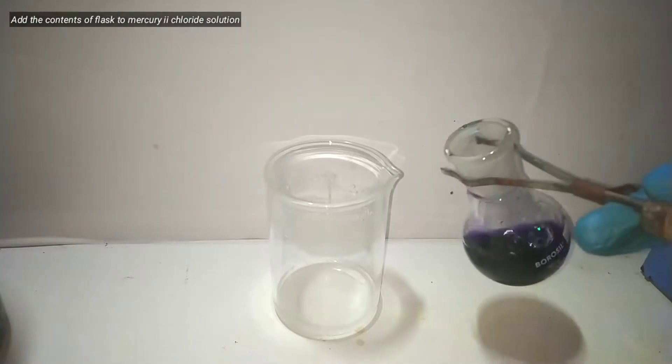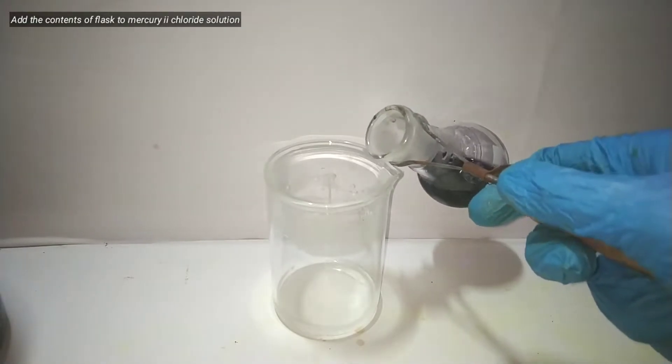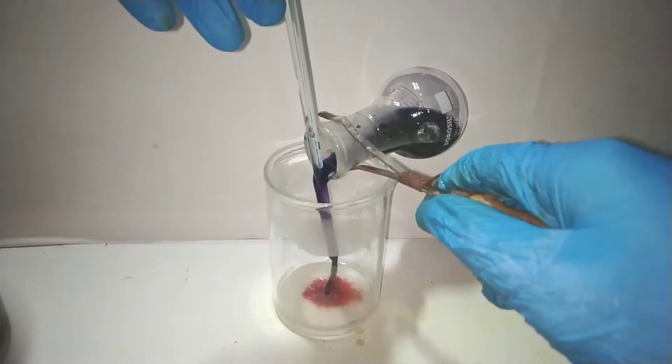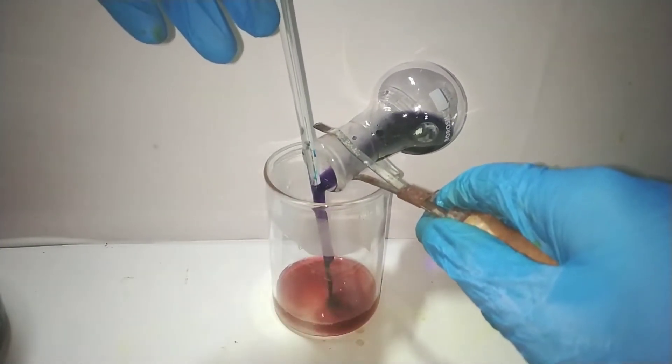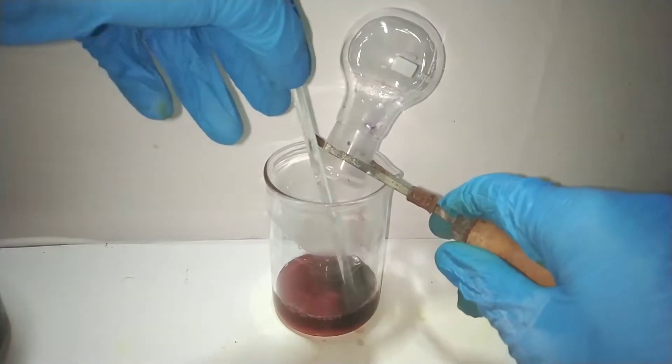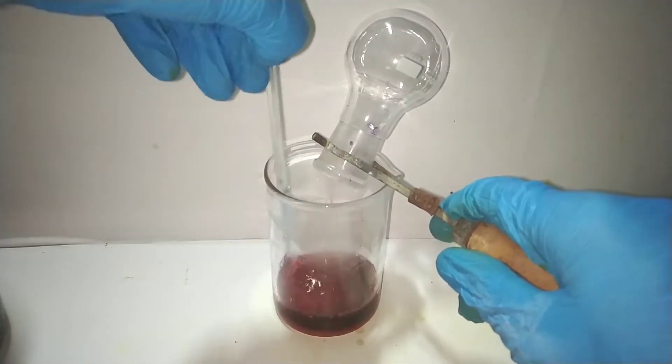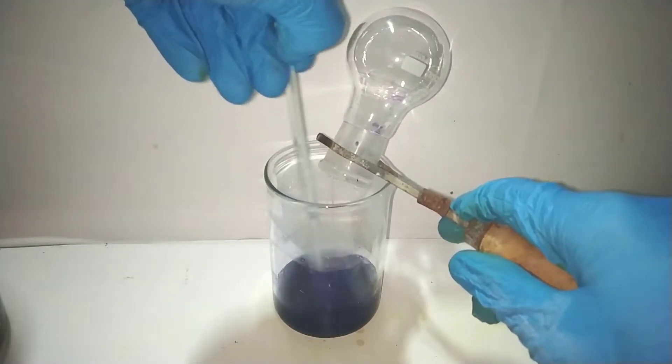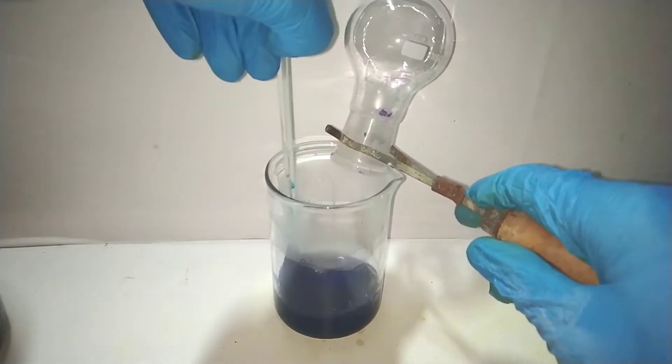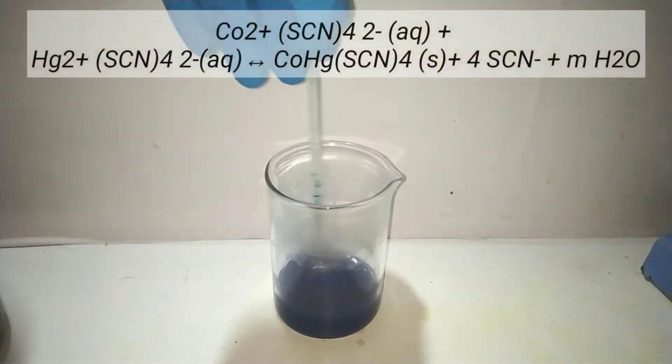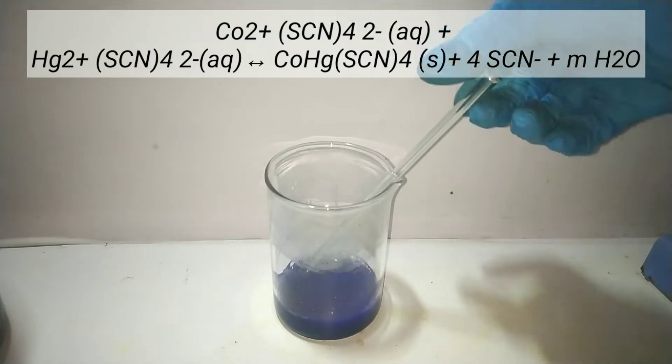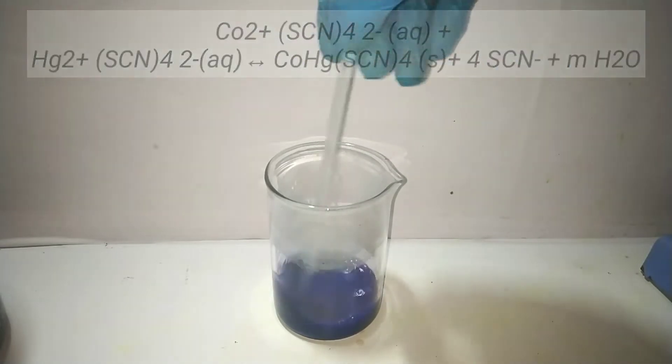Now we pour the contents of the round bottom flask to the mercury(II) chloride solution and then mix it well. On mixing the contents well we immediately see the color change and a blue precipitate has formed. This is actually the mercury(II) tetrathiocyanate of cobaltate(II) crystals precipitating out when there is equilibrium between the cobalt tetrathiocyanate and mercury tetrathiocyanate ions.